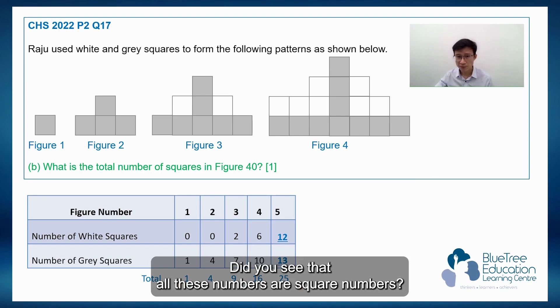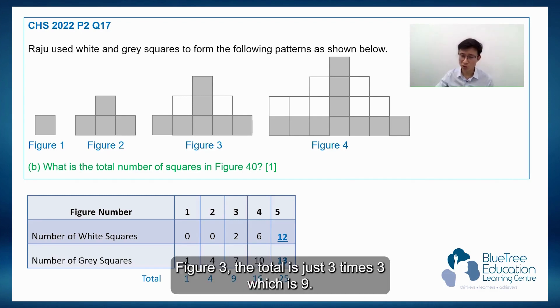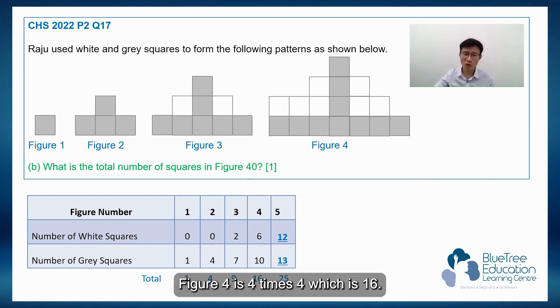Do you see that all these numbers are square numbers? Figure 1 is just 1 times 1. Figure 2 is just 2 times 2. Figure 3, the total is just 3 times 3, which is 9. Figure 4 is 4 times 4, which is 16. Figure 5 is 5 times 5, which is 25.